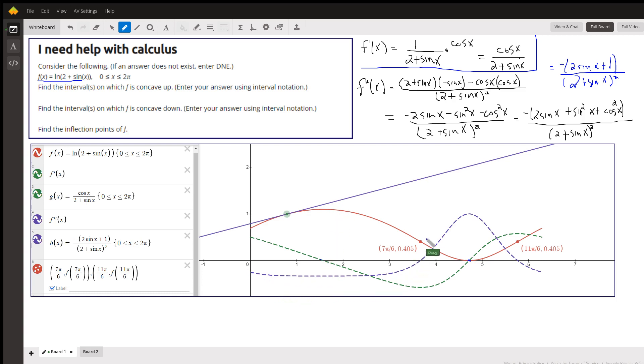And the purple graph is the graph of the second derivative, and it looks like it's 0 right about here and also right about here at 11π over 6.